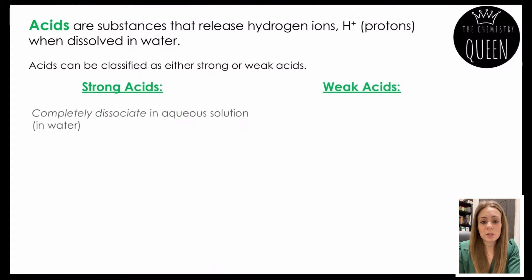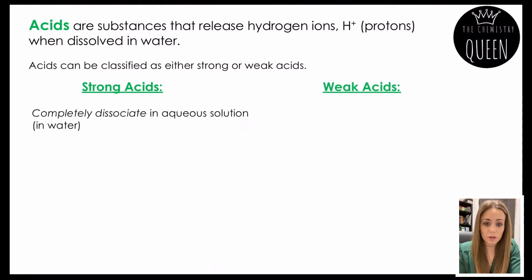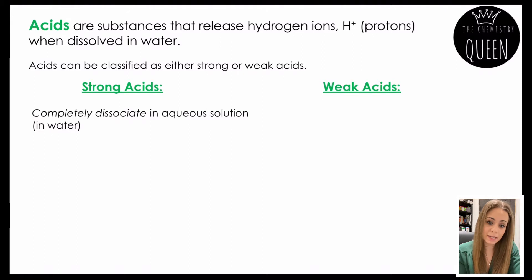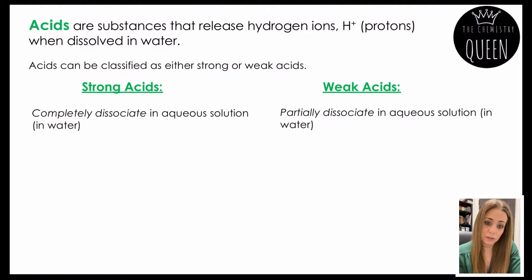The difference between a strong and a weak acid: when an acid dissolves in water it will dissociate, which basically means it's breaking down, and the part that breaks down is the part that releases the hydrogen ion. Strong acids, when dissolved in water, will completely dissociate to form hydrogen ions. Weak acids will only partially dissociate — so only some of the acid molecules will break down to release H+ ions.